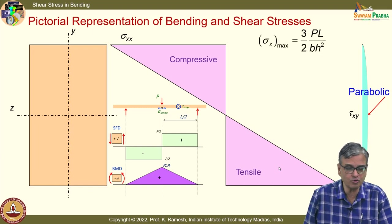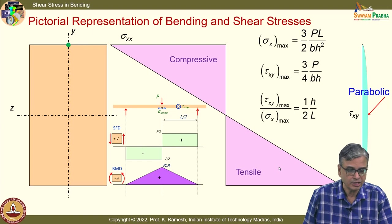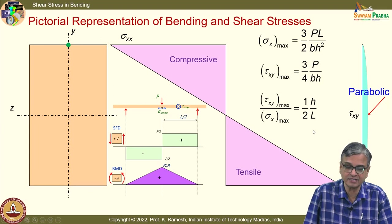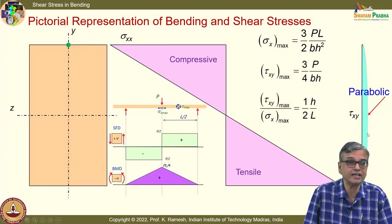We have also looked at the stress tensor comparison in terms of numbers: τ_xy_max divided by σ_x_max gives 1 over (H/2L). So if H/L is 1/10, the shear stress is 20 times less than the normal stress. That is the idea you should have.